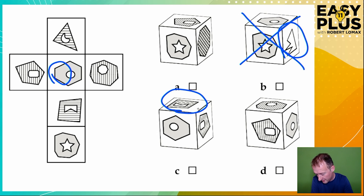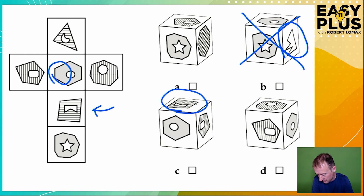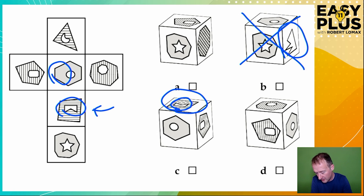Now what about this here? Again, everything's been flipped around, so if it's above our central figure on this cube, then it must be below it on the net. So it should be here. Do we see a similar shape? Yes, it looks like it. We can see this figure here — it seems to match up with that there. So C looks like a plausible option, something that might give us our answer.